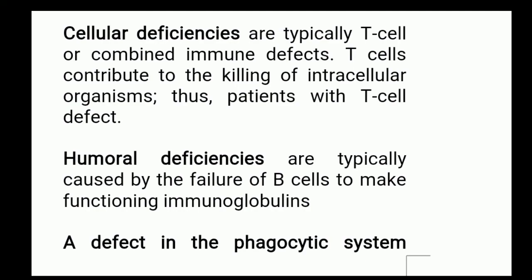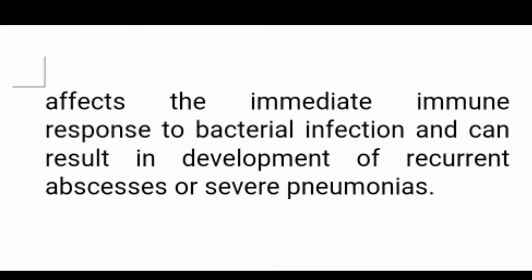Next are humoral deficiencies, which are typically caused by failure of B cells. B cells — B standing for bursa of the bone marrow — help form antibodies, so persons without B cells have humoral deficiency. Next is defect in the phagocytic system, which affects the immediate immune response to bacterial infection and can result in the development of recurrent abscesses or severe pneumonias.